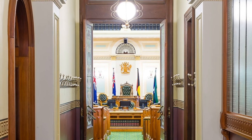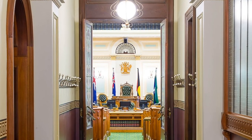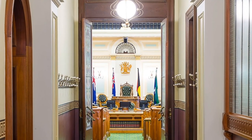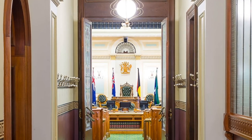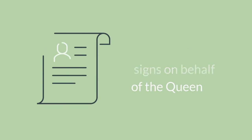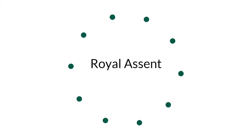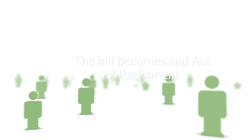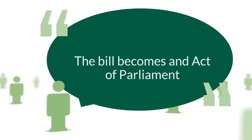Once these stages are complete, the bill is considered to have been passed by the Legislative Assembly, but it still has to be presented to the Governor to sign as the Queen's representative. This is called Royal Assent. After this, the bill will become a law, or officially, an Act of Parliament.